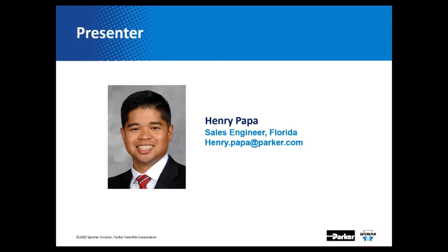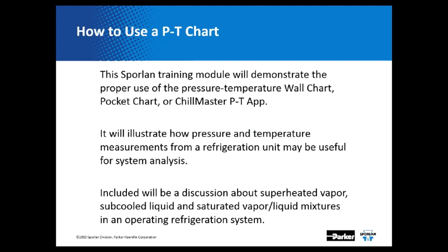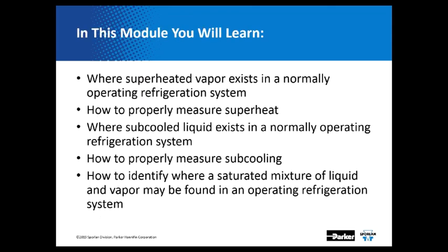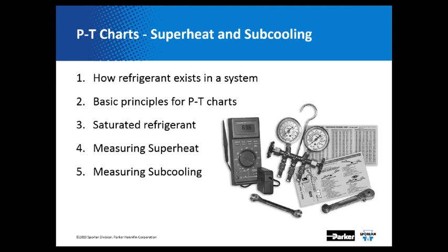In this training module on how to use a PT chart, we're going to demonstrate the proper use of a PT wall chart, pocket chart, or our Chill Master PT app. It will illustrate how pressure and temperature measurements from a refrigeration unit may be useful for system analysis, and will include a discussion about superheated vapor, subcooled liquid, and a saturated mixture where we have both vapor and liquid present. You're going to learn where superheated vapor exists, how to properly measure superheat, where subcooled liquid exists, how to measure subcooling, and how to identify where a saturated mixture of liquid and vapor may be found.